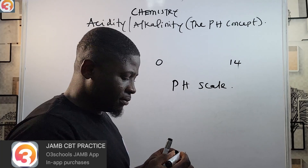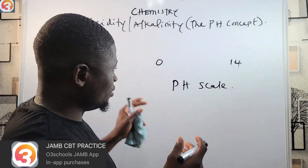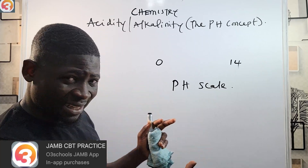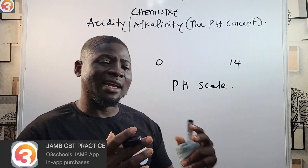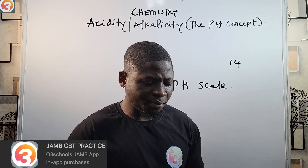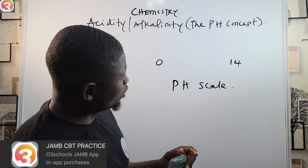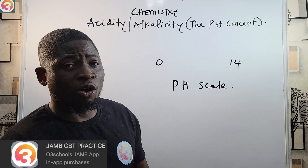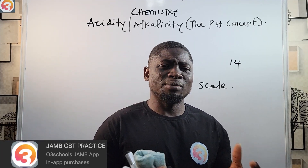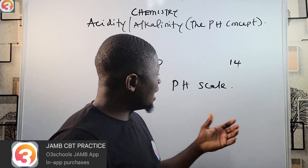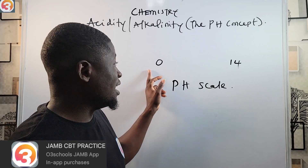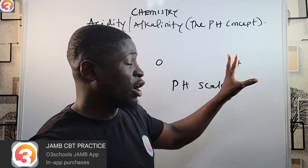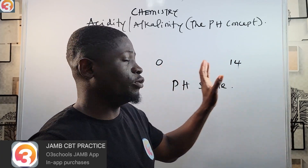So it's a scale with numbers from 0 to 14 used to express the acidity or alkalinity of a substance. Also note that the pH of a substance may be less than 0, or in other cases greater than 14 — it's not necessarily always confined to 0 to 14.